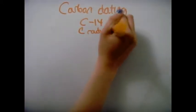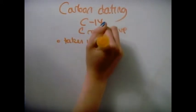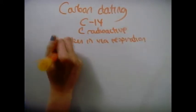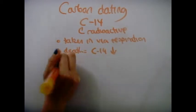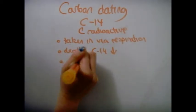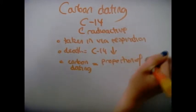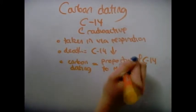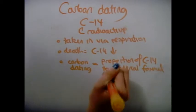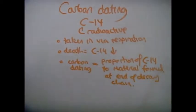Carbon dating. Carbon-14 is radioactive but acts just like carbon-12 and therefore is taken in by all things in respiration. After death, the proportion of C-14 reduces. The material can be dated by measuring the proportion of C-14 to the material formed at the end of the decay chain.